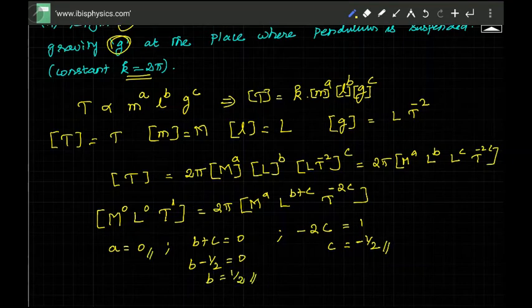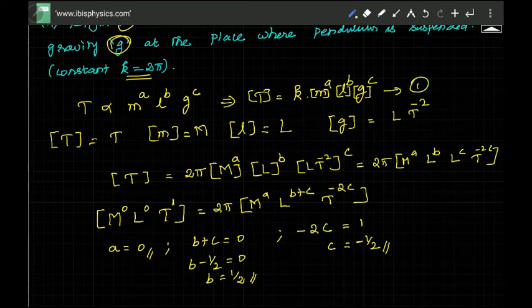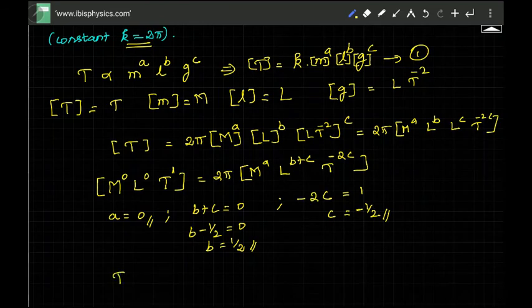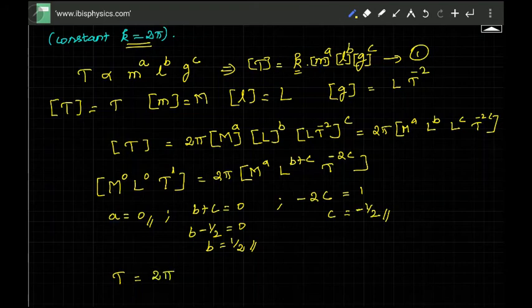We are supposed to substitute this back in equation 1. T is time period equal to K. The value of K is 2π. And M^a is M^0.